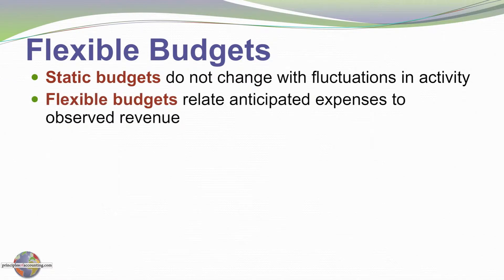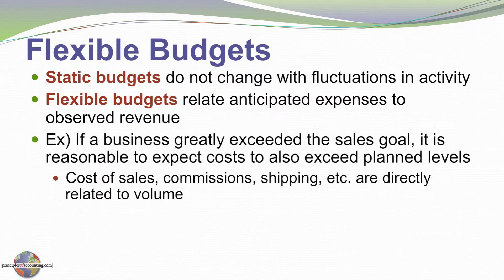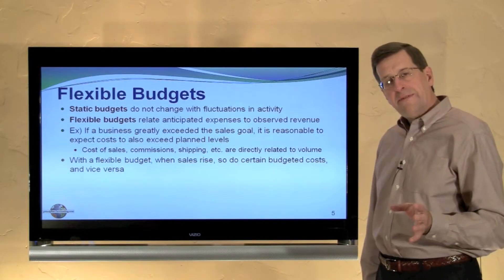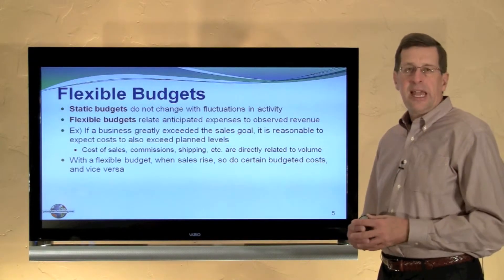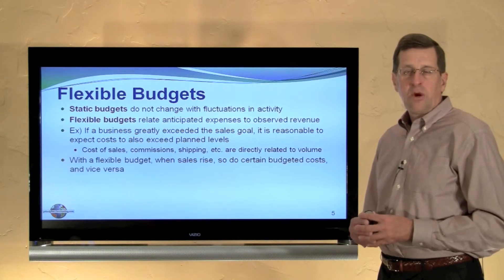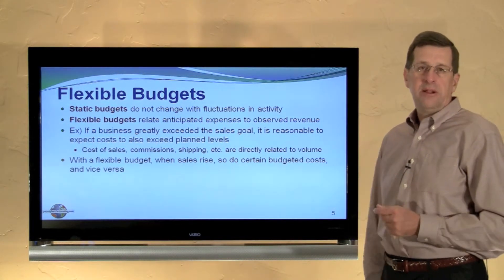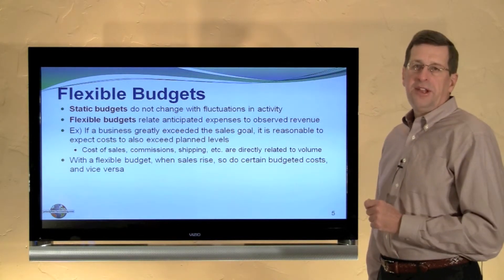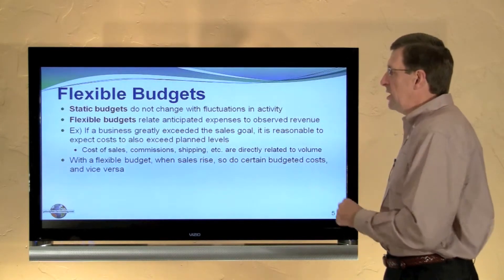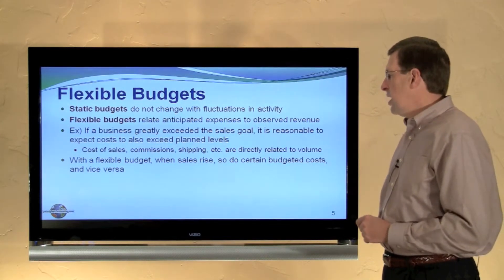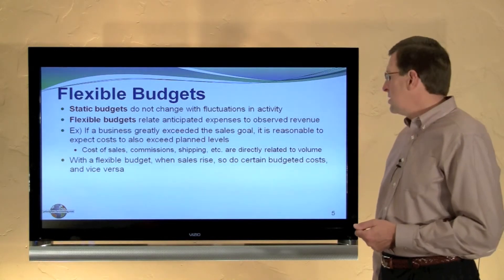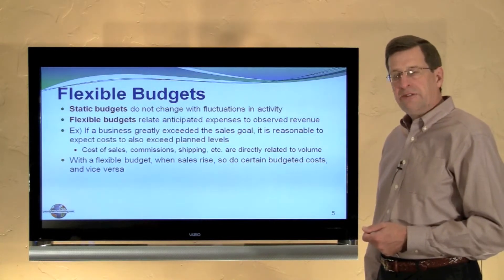A flexible budget is one that anticipates volume changes. If a business exceeds its sales goals, it's reasonable to expect that certain costs would also exceed plan levels, such as commissions, cost of sales, shipping expenses, and so on that are directly related to volume. In a follow-up chapter we'll look at an example of a flexible budget where budgeted amounts are a function of the level of sales or activity for the period. With a flexible budget, when sales rise, so do certain budgeted costs, and vice versa.